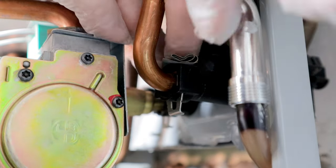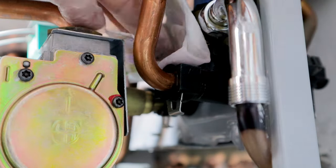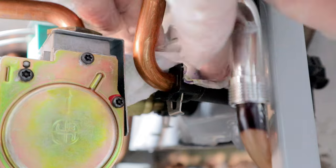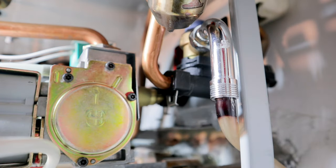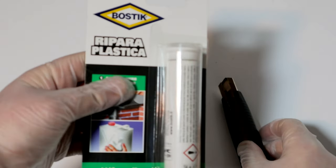I sand the area of the hole to increase the grip of the epoxy putty. I degrease the plastic with denatured alcohol that I had available. I dry everything with a heat gun, but a normal hair dryer can also be used even if the times will be longer.